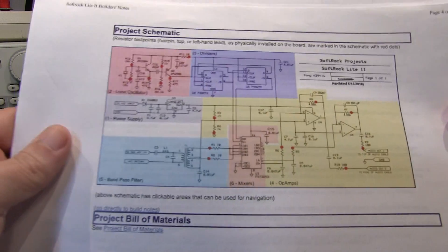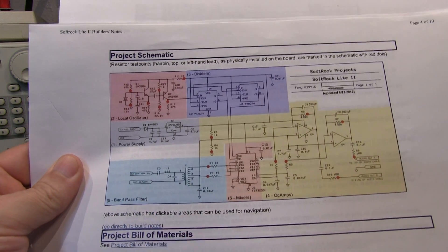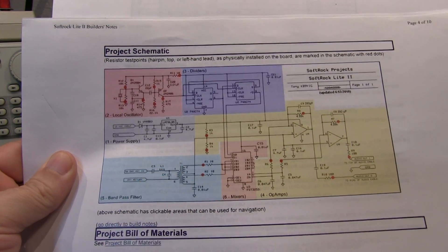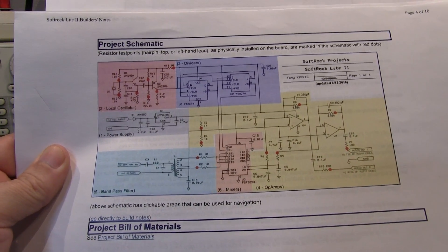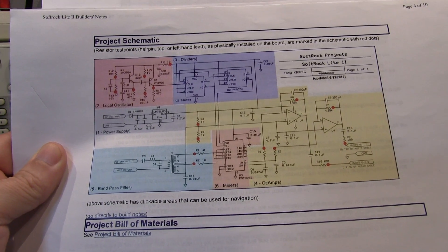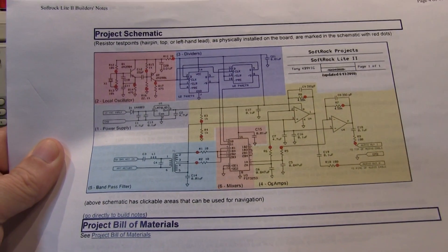The front end of this kit includes a very simple bandpass filter and we built this to work with the 30 meter HF frequency band which is centered around 10.1 MHz or so.